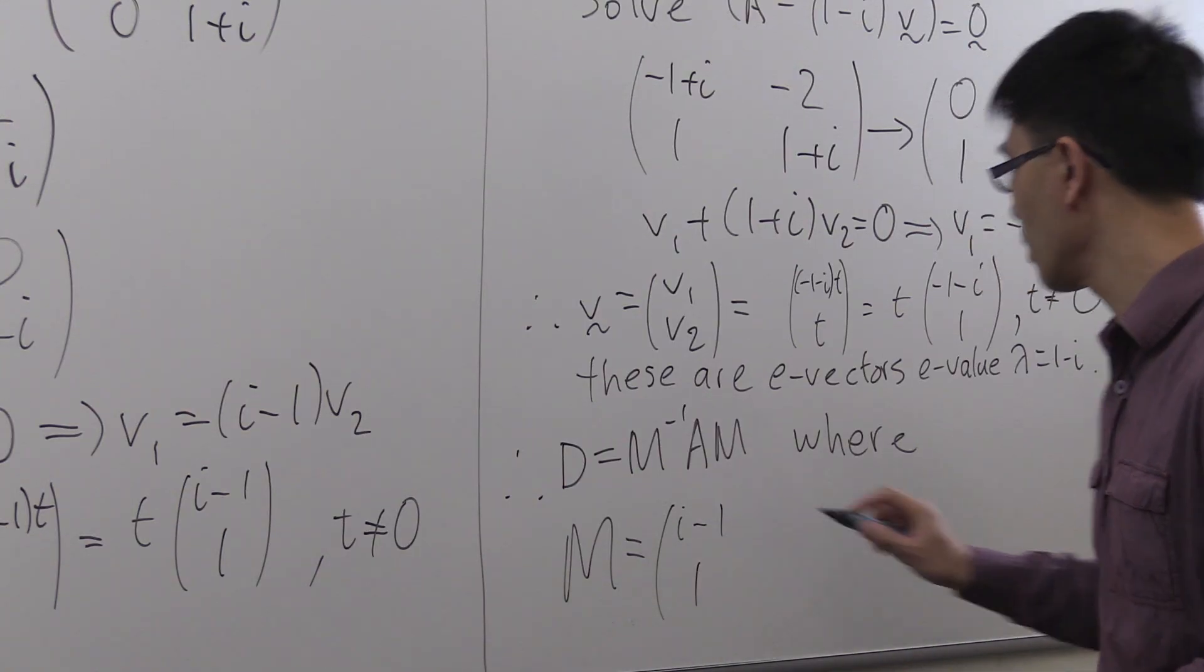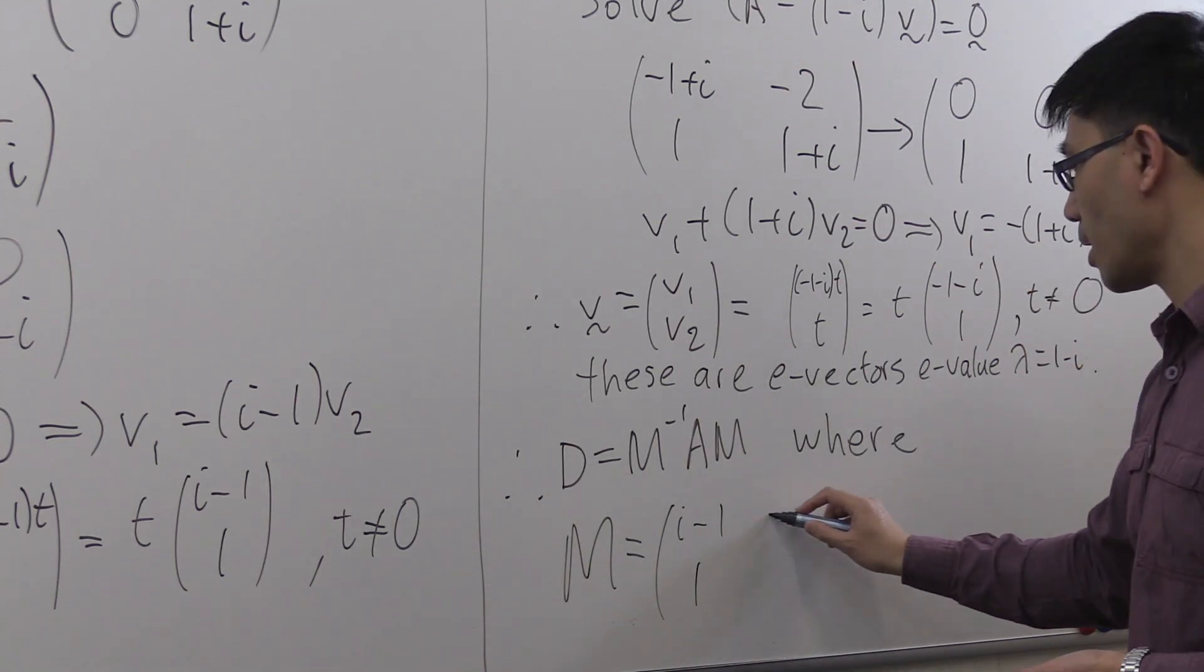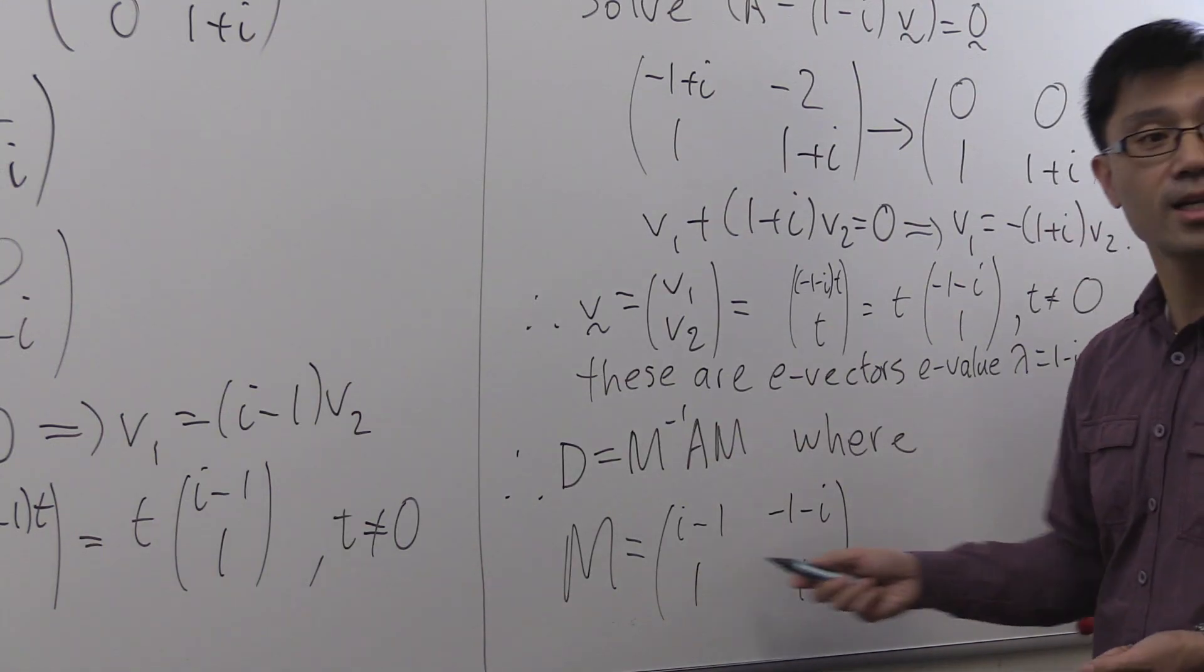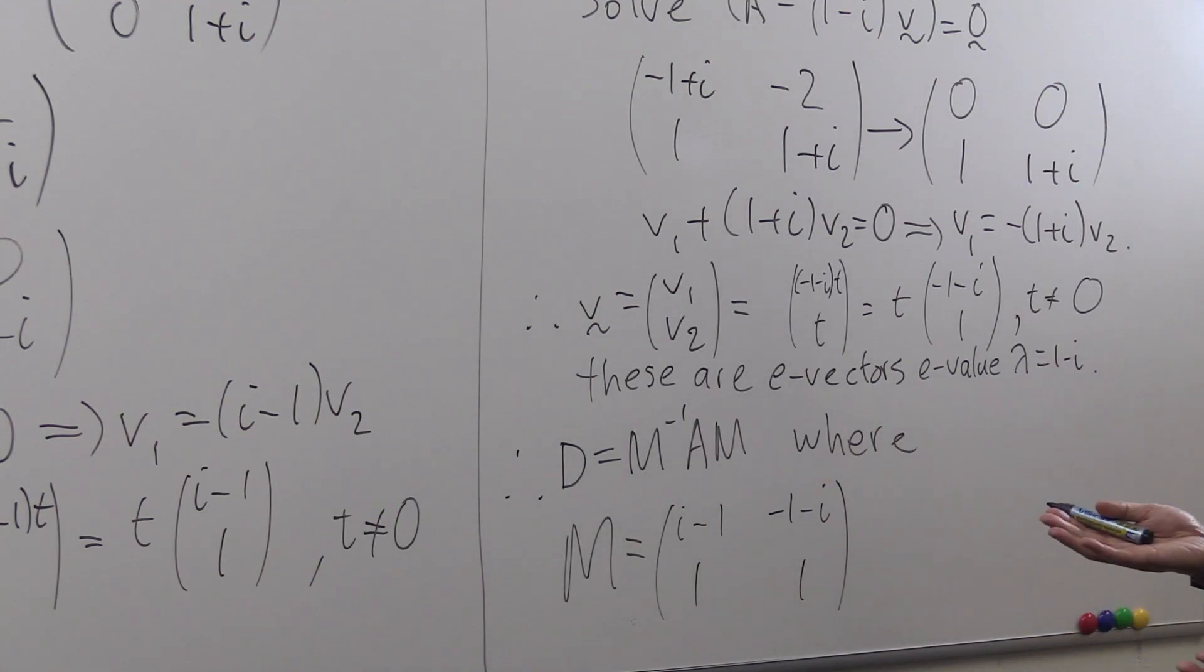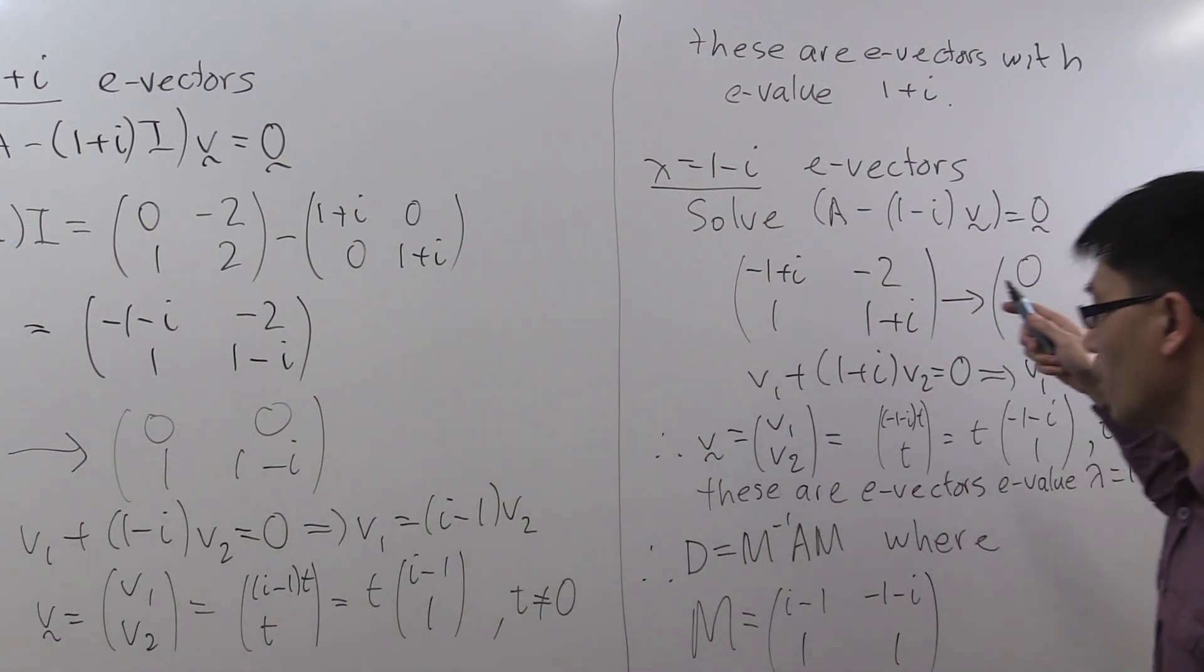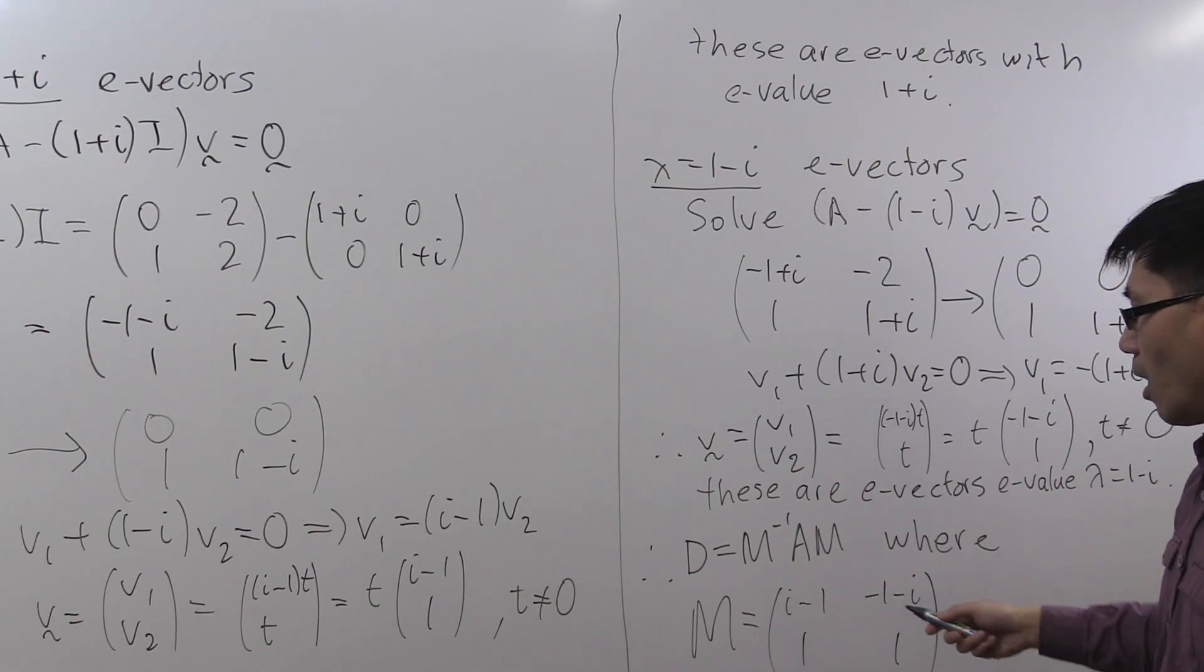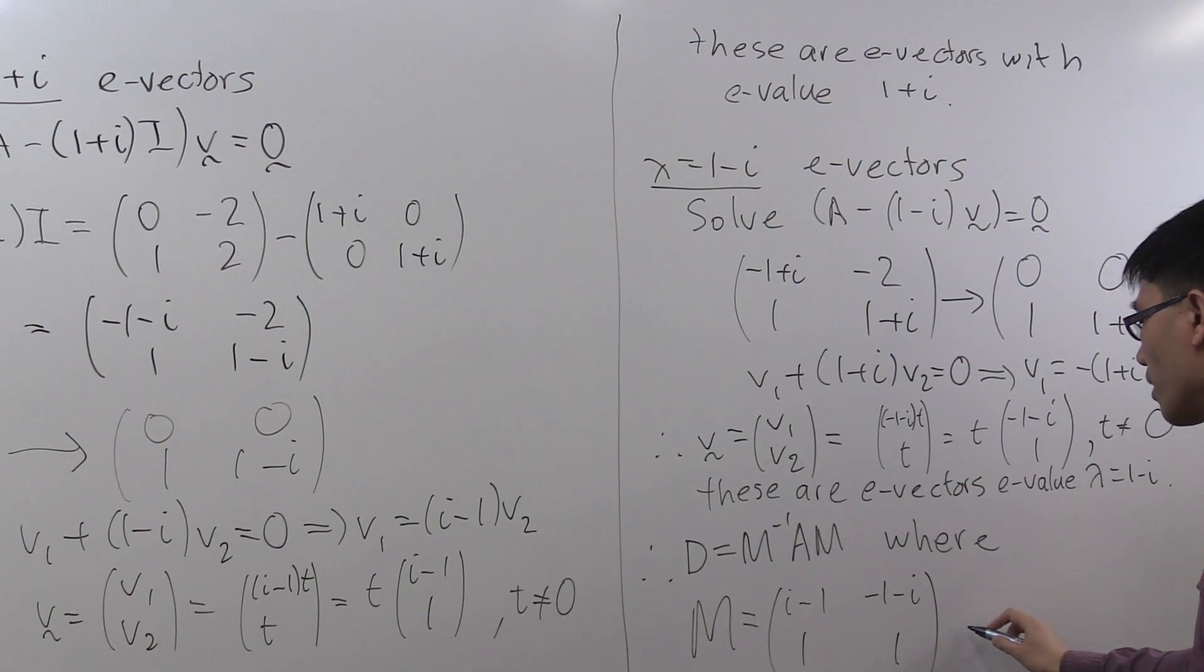So we have [(i-1), 1] and in setting t equals 1 here, we have another eigenvector, [(-1-i), 1]. And they clearly seem to be linearly independent and hence form a basis. And actually, we know that from the theory because these eigenvalues are distinct. So if you have eigenvectors from distinct eigenvalues, then they will be linearly independent. So there's the M there that we desire.